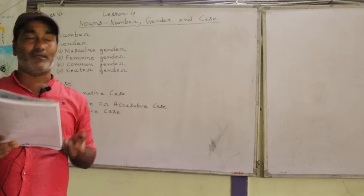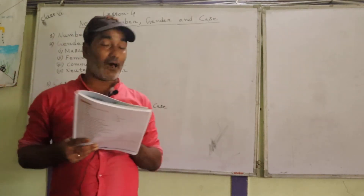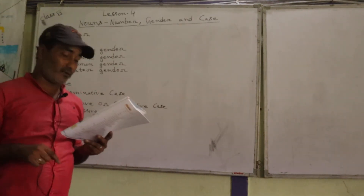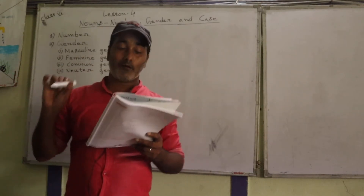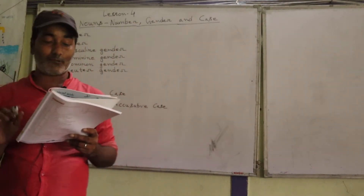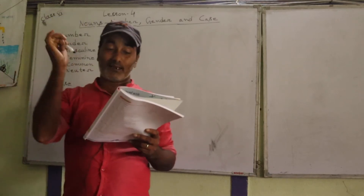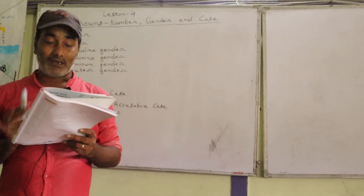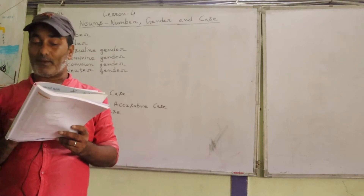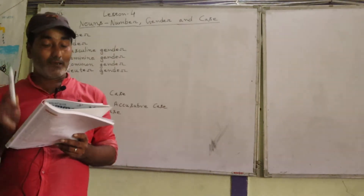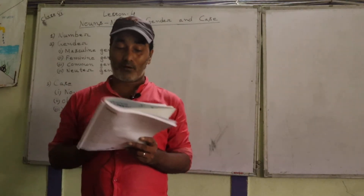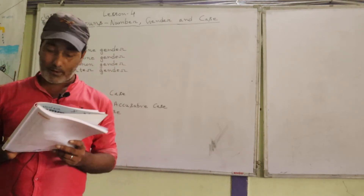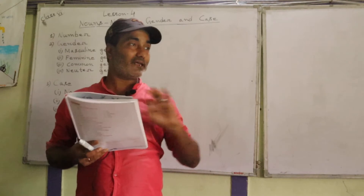When a noun is used as the subject of a verb, then it is said to be in nominative case. For example: 'Sunita opened the window.' Here, the verb is 'opened' and the subject of that verb is 'Sunita.' That is why Sunita is in nominative case.